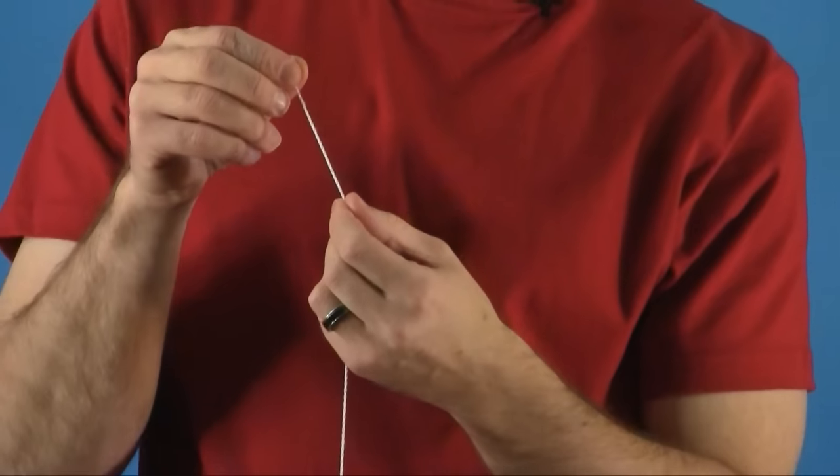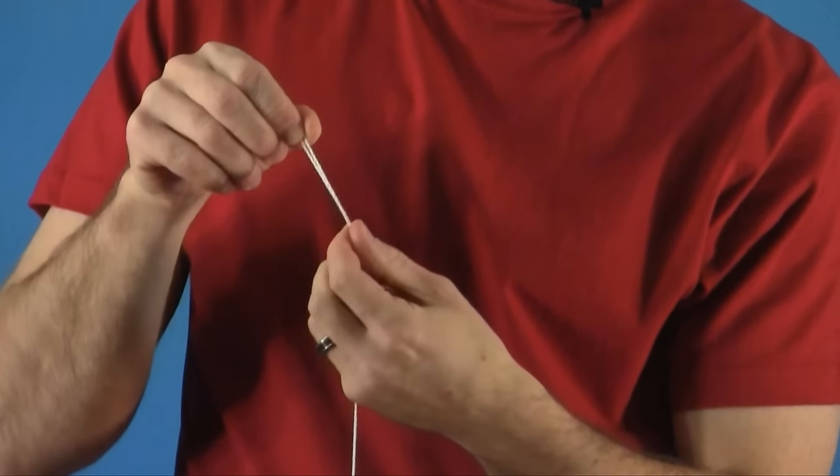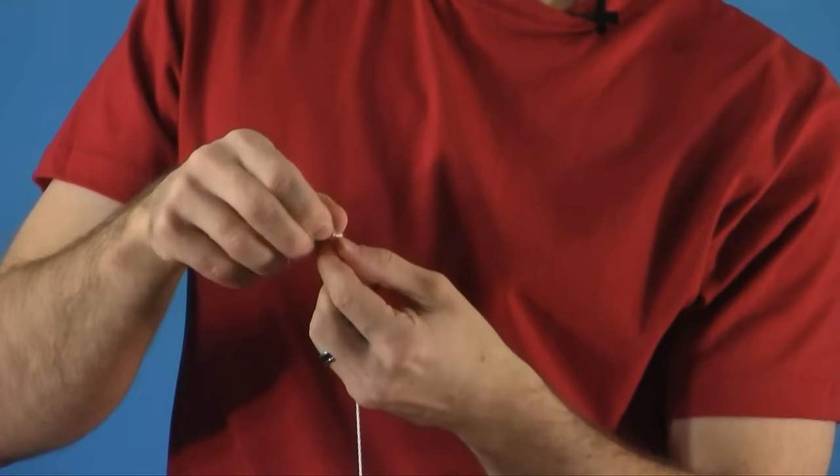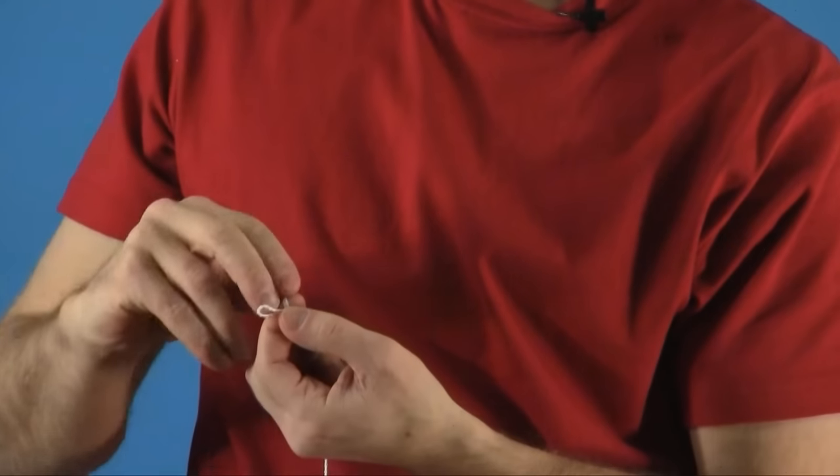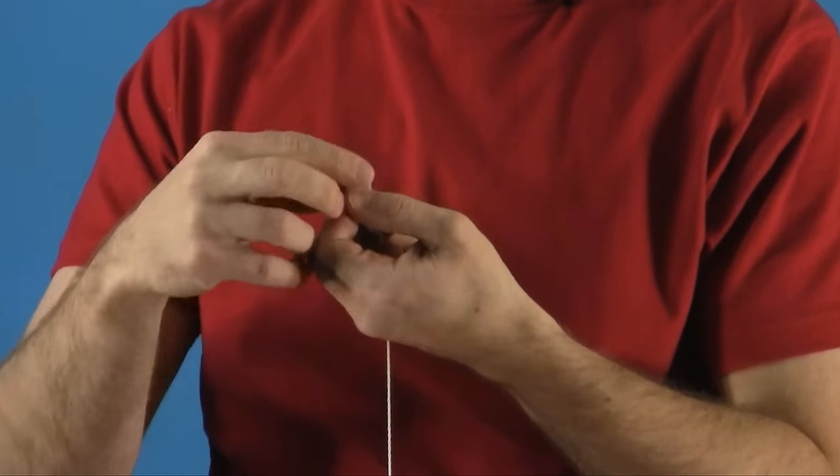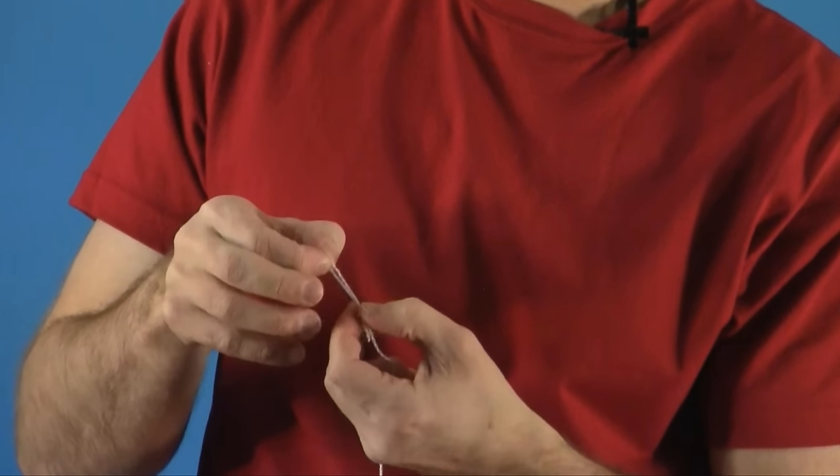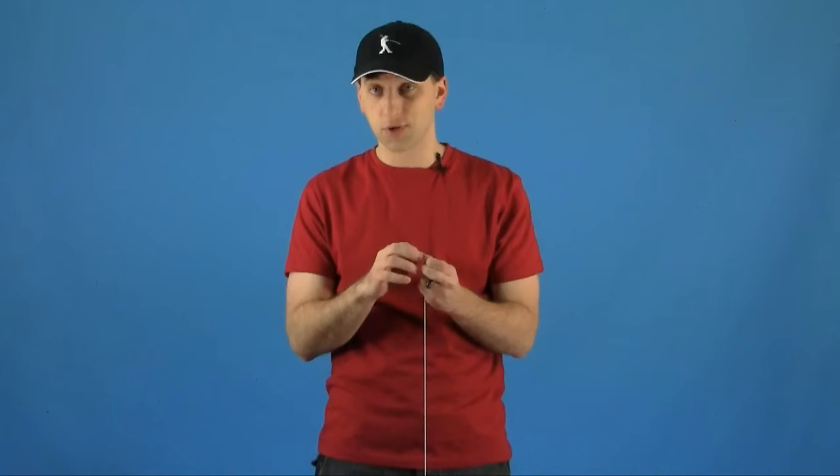Take the string you just cut and fold it over, then treat these two strings as one. Wrap it around your finger to make a little loop, then take the top of the string and feed it through that loop. When you pull it tight, this will form the same kind of loop your yoyo had when you bought it.